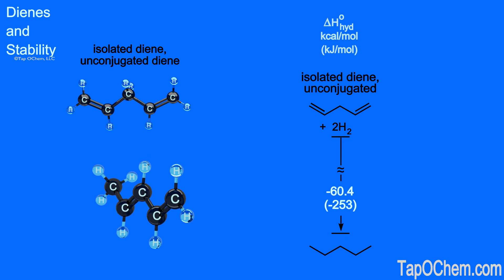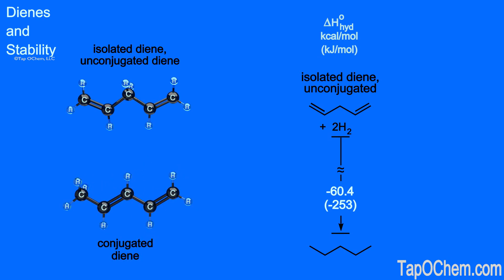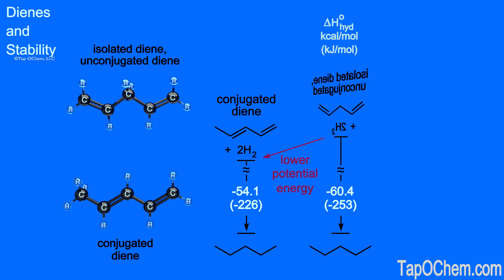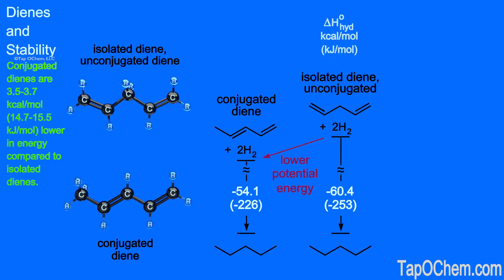Now let's bring in the conjugated diene 1,3-pentadiene. The hydrogenation of 1,3-pentadiene releases 54.1 kilocalories per mole of energy, significantly less than the isolated diene. This conjugated diene is lower in energy than the isolated diene — this is a general trend. When differences in other bonding are taken into account, for example 1,3-pentadiene has a disubstituted double bond and 1,4-pentadiene does not, a generally accepted value for the gain in stability for conjugated dienes is around 3.5 to 3.7 kilocalories per mole.